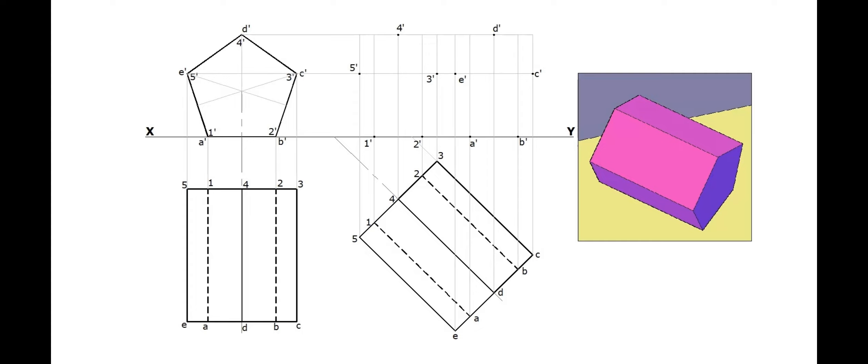Here the front base is fully visible. So draw edges A' B', B' C', C' D', D' E', and E' A' as dark edges.